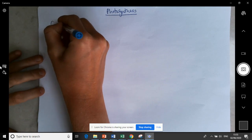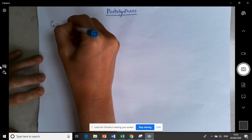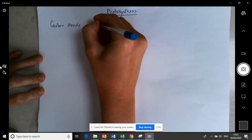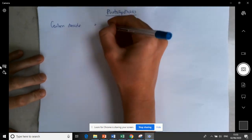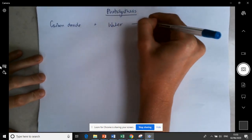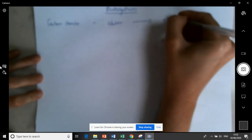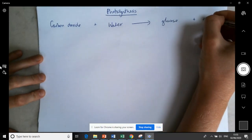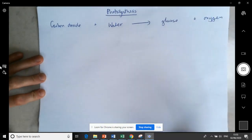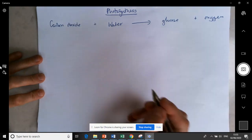We have to know the word and symbol equation. So it's carbon dioxide plus water goes to glucose plus oxygen. That's the word equation.